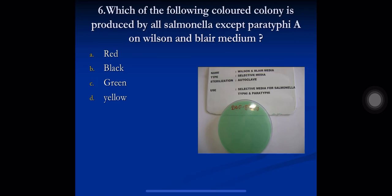Question 6: which colored colony is produced by all Salmonella except paratyphi A on Wilson and Blair medium? All Salmonella produce H2S except paratyphi A, and those which produce H2S will produce black colored colonies. So all Salmonella produce black colonies except paratyphi A. The correct option is B) black.